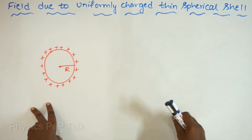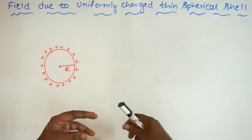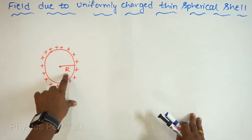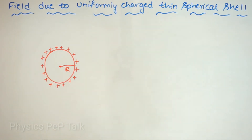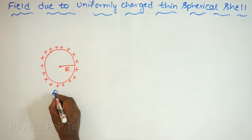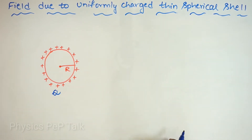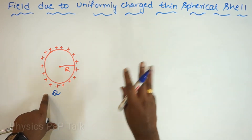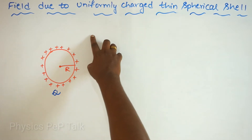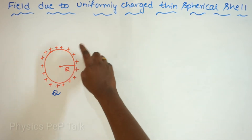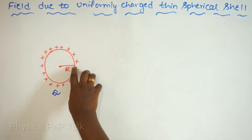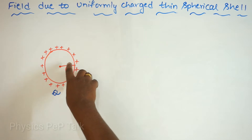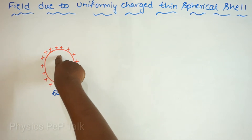This thin spherical shell is hollow from inside. I will consider a hollow sphere of radius capital R, charged by a value of capital Q. Because of this charge, the electric field can be divided into three cases. First, I will consider a point P outside this spherical shell. Second, I will consider a point P on the surface of this hollow sphere. And in the third case, I will consider a point P inside the spherical shell.